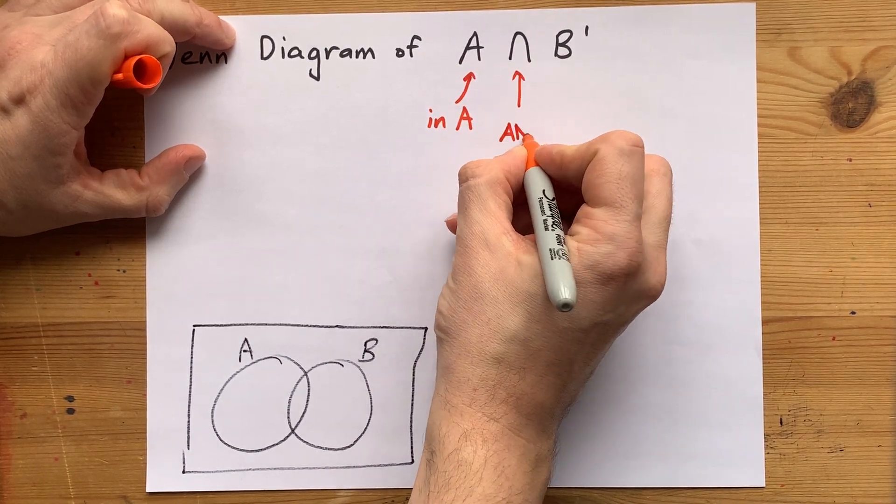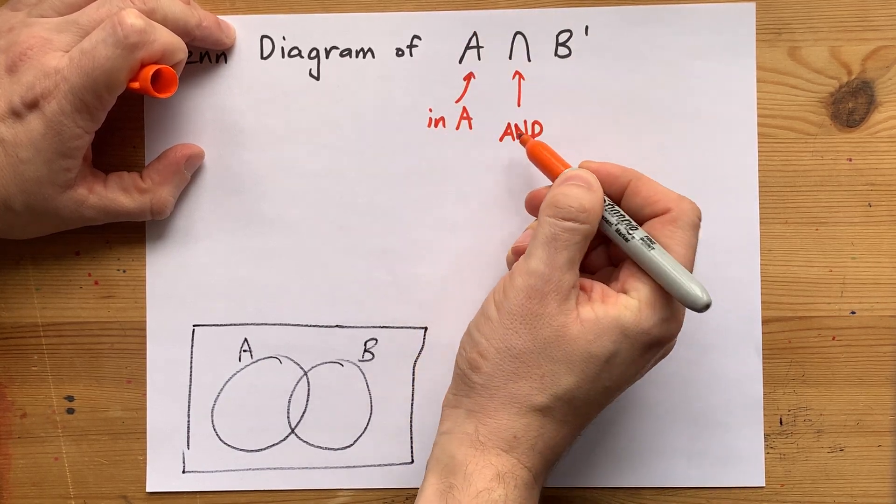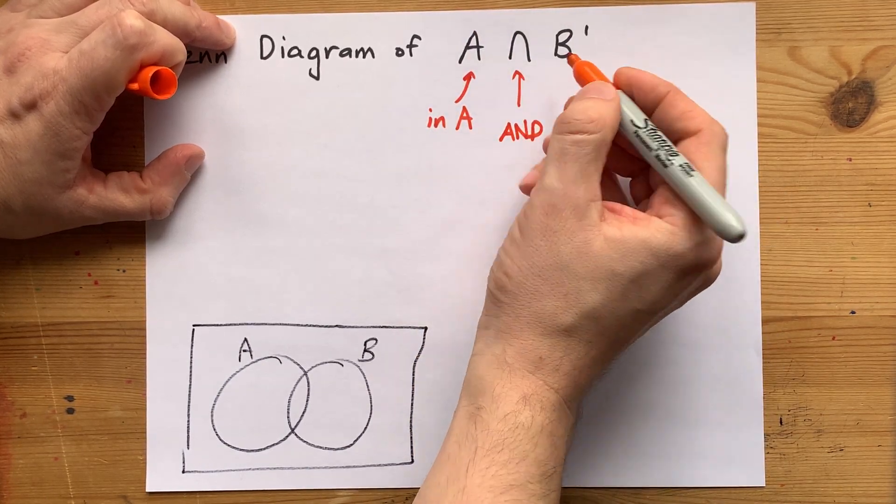Intersect is code for and, meaning that this has to be true, it has to be inside of A. And, as well, this has to be true.